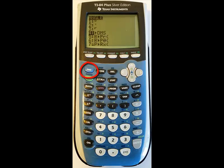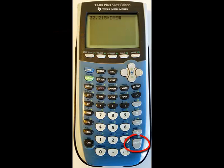Step 2: Click Second, then Angle. Step 3: Scroll down to the fourth option, labeled DMS, then press Enter.